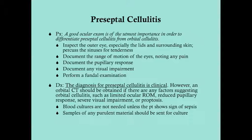The most important thing is to rule out orbital cellulitis. If you're unsure, get an orbital CT — especially if there's an abnormal pupillary response, limited range of eye motion, severe visual impairment, or papilledema. However, an orbital CT is not necessary for the diagnosis of preseptal cellulitis, which is a clinical diagnosis.